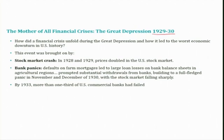This event was brought on by the stock market boom in the beginning. In 1928 and 1929 there was a stock market boom in the US. The stock prices doubled in the US market in these years. The Federal Reserve officials viewed the stock market boom as caused by excessive speculation, and in order to curb it they pursued a tightening of monetary policy to raise interest rates in an effort to limit the rise in stock prices.